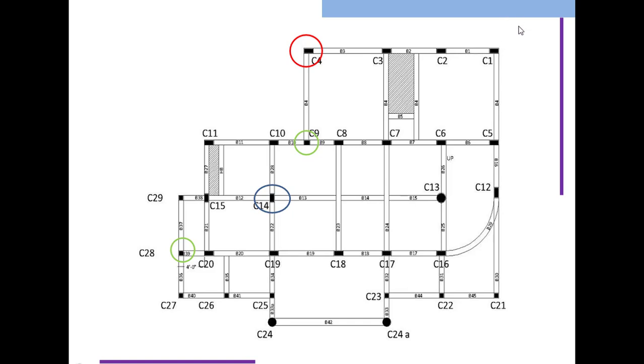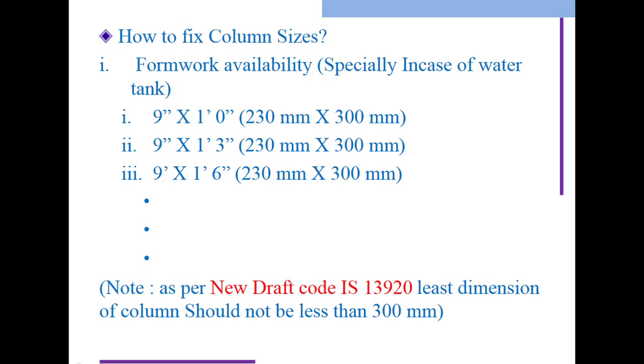You can see the rectangular column at the corner side. If we're getting wind load, we need to manage the stresses. Stress equals load divided by area. Stresses are inversely proportional to area - maximum stress means low area, maximum area means low stress. That's why we provide maximum area to avoid high stresses.